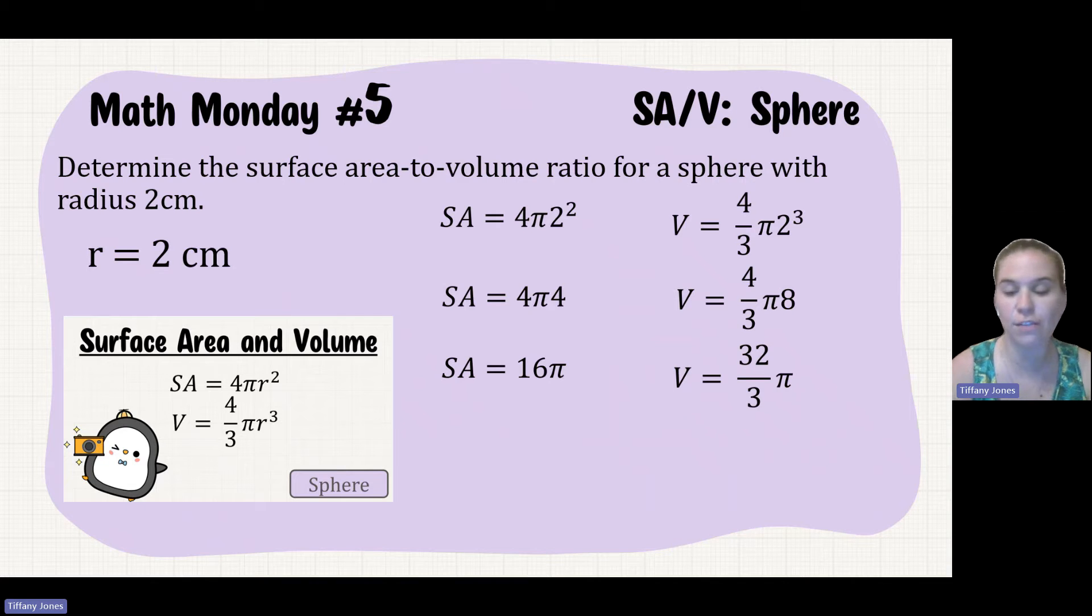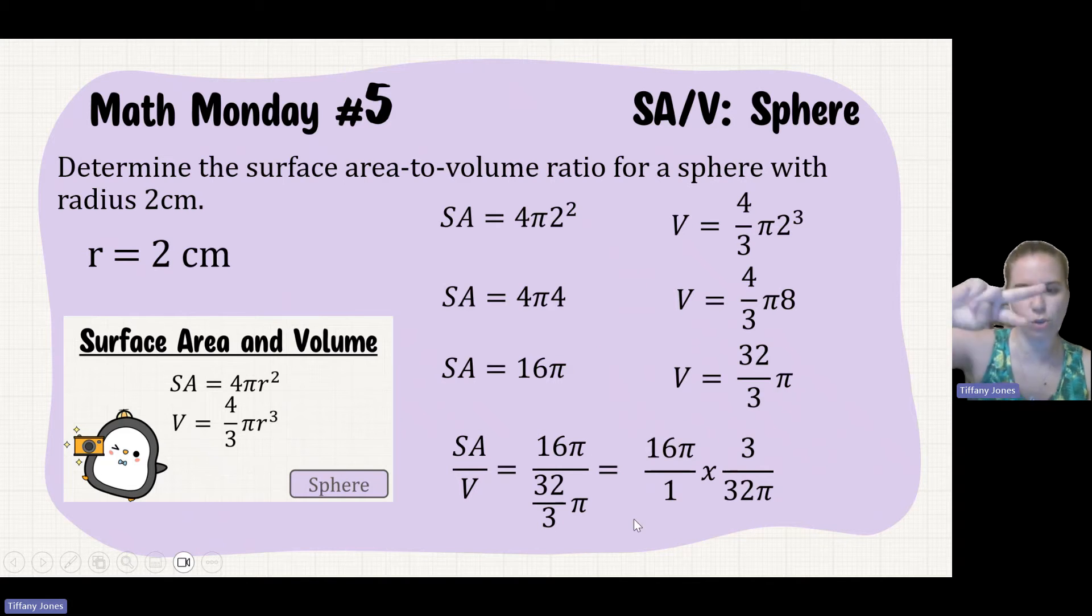And then if I want to do my surface area to volume ratio, I take my surface area divided by my volume. So in case you don't know, whenever you have a fraction in the denominator, you will go ahead and split that out. So that would be 16/1 times 3/32. So you just do the reciprocal of that fraction, because when you have a denominator in the denominator, it actually moves over into the numerator.